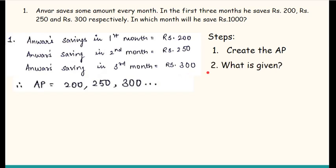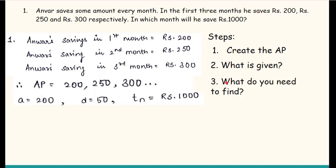Second step is to find out what is given to me. From this information, I found out: first term is 200, common difference is 50, and TN is given in the question. It says in which month will he save Rs. 1000, so TN is given, which means I need to find N. The third step is I need to know what is it that I need to find - in this case, I need to find N.